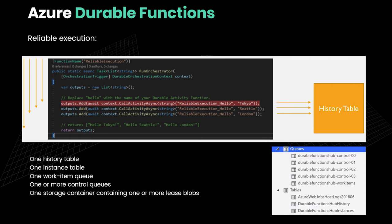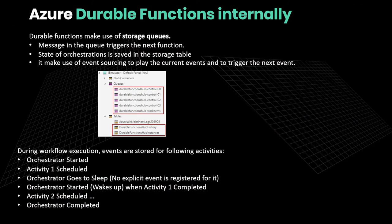With Durable Functions, reliable execution means each step of your workflow is tracked in a history table, along with an instance table, control queues, and more — all automatically created and deployed when you create the Durable Function. Internally, the orchestrator starts an action by sending a message to an internal queue, the state of the orchestration is saved into a storage table, and the orchestrator goes to sleep, waking again when the activity completes and a new message is sent to the queue. This pattern is totally handled by the Durable Framework — you don't have to worry about it.